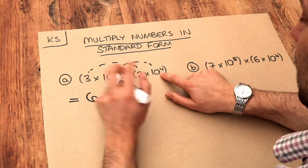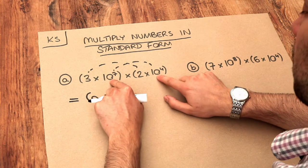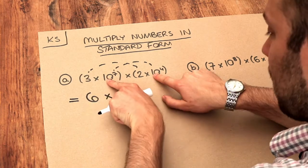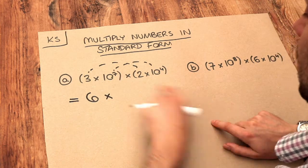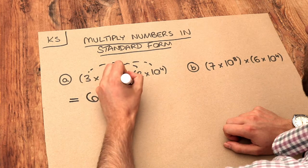We've got 10 to the 7 times 10 to the 4. Now remember when we multiply two powers together with the same base of 10 in this case, then we add the indices. So 7 plus 4 is 11, so it'd be 10 to the 11.